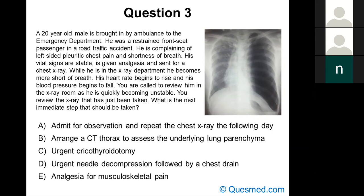While he is in the x-ray department, he becomes more short of breath. His heart rate begins to rise and his blood pressure begins to fall. You are called to review him in the x-ray room as he is quickly becoming unstable. You review the x-ray. What is the next immediate step? Is it A admit for observation, B arrange CT thorax, C urgent cricothyroidotomy, D urgent needle decompression followed by a chest drain, or E analgesia for musculoskeletal pain?